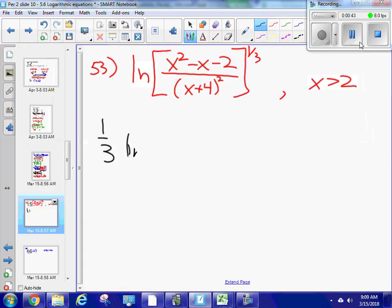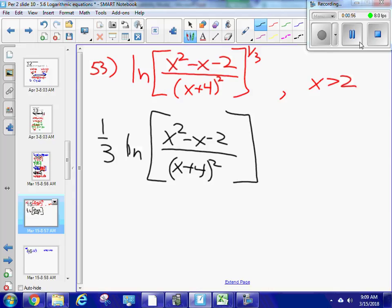One-third ln x squared minus x minus 2 over x plus 4 squared. Okay, so I've turned my exponent into a power. All right, got to expand some more.